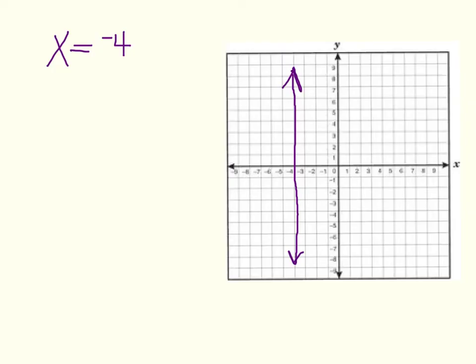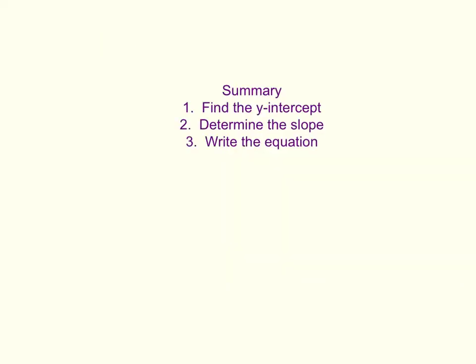The reason the slope is called undefined is because the run, which would be the denominator, is 0. And you cannot divide a number by 0. So to summarize, first, you find the y-intercept. Second, you determine the slope. And third, you write the equation. I hope this video helps you in writing linear equations from a graph. And I look forward to working with you next time. Thank you.